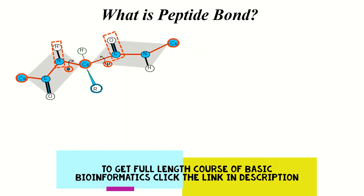As we have discussed earlier, the peptide bond has a double bond-like character. Due to this double bond-like character, both Phi and Psi have a limited degree of rotation. The limited degree of rotation means that Phi and Psi cannot rotate up to 180 degrees.